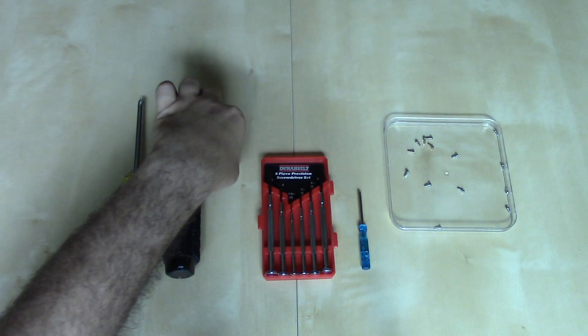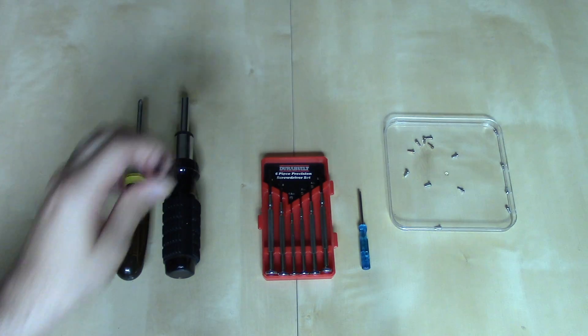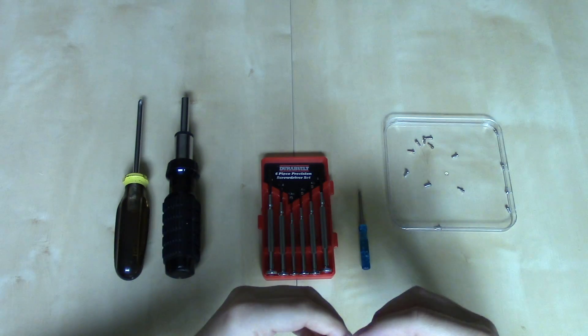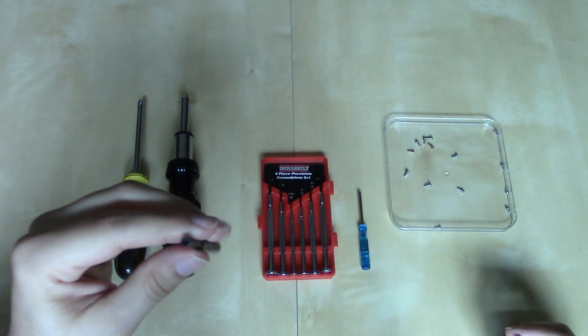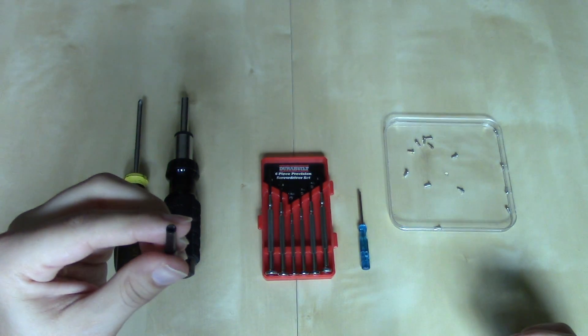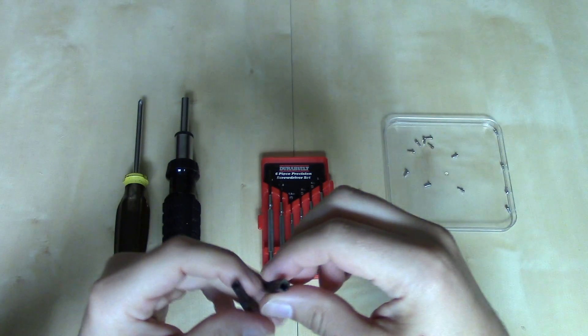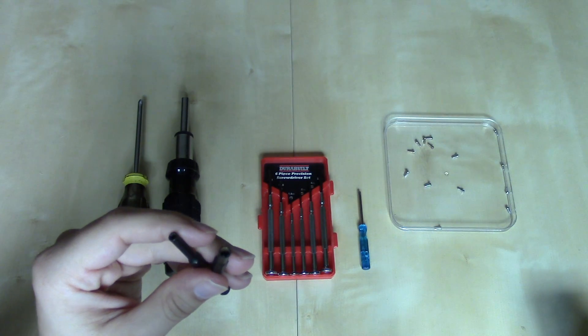What you're going to need are two sizes of game bits. You can get these on Amazon, you can get them on eBay, etc. You're going to need a 3.8mm game bit, which is the smaller one, and a 4.5mm game bit, which is the larger one.